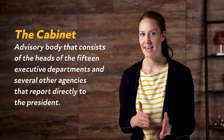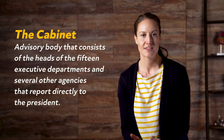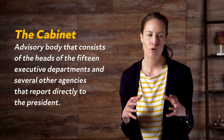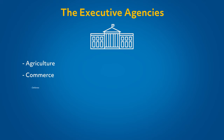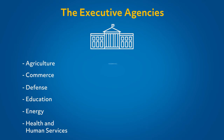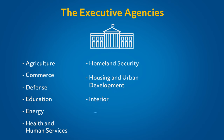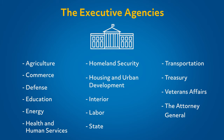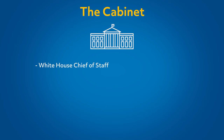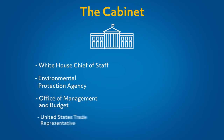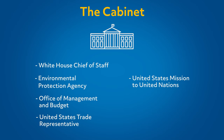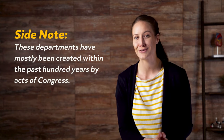While the president and vice president are probably the most well-known members of the executive branch, the cabinet also plays an important role. This is the advisory body that consists of the heads of the 15 executive departments and several other agencies that report directly to the president. The executive agencies are agriculture, commerce, defense, education, energy, health and human services, homeland security, housing and urban development, interior, labor, state, transportation, treasury, veterans affairs, and the attorney general. The cabinet also includes the White House chief of staff and heads of the Environmental Protection Agency, Office of Management and Budget, United States Trade Representative, United States Mission to the United Nations, and Small Business Administration. These departments have mostly been created within the past hundred years by acts of Congress.